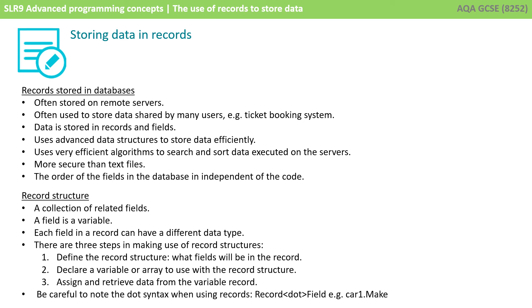We then looked at records stored in databases, often stored on remote servers, and often used to store data shared by many users, for example a ticket booking system. Data is stored in records and fields. It uses advanced data structures to store data in an efficient way, and uses very efficient algorithms to search and sort data executed on the servers. This is much more secure than storing data in simple text files, and the order of the fields in the database is now independent of the code.